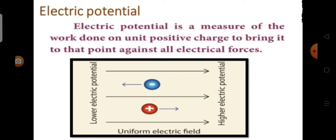There is a work done on the charges to keep them together. This results in a quantity called electric potential. Electric potential is a measure of work done on unit positive charge to bring it to that point against all the electrical forces.